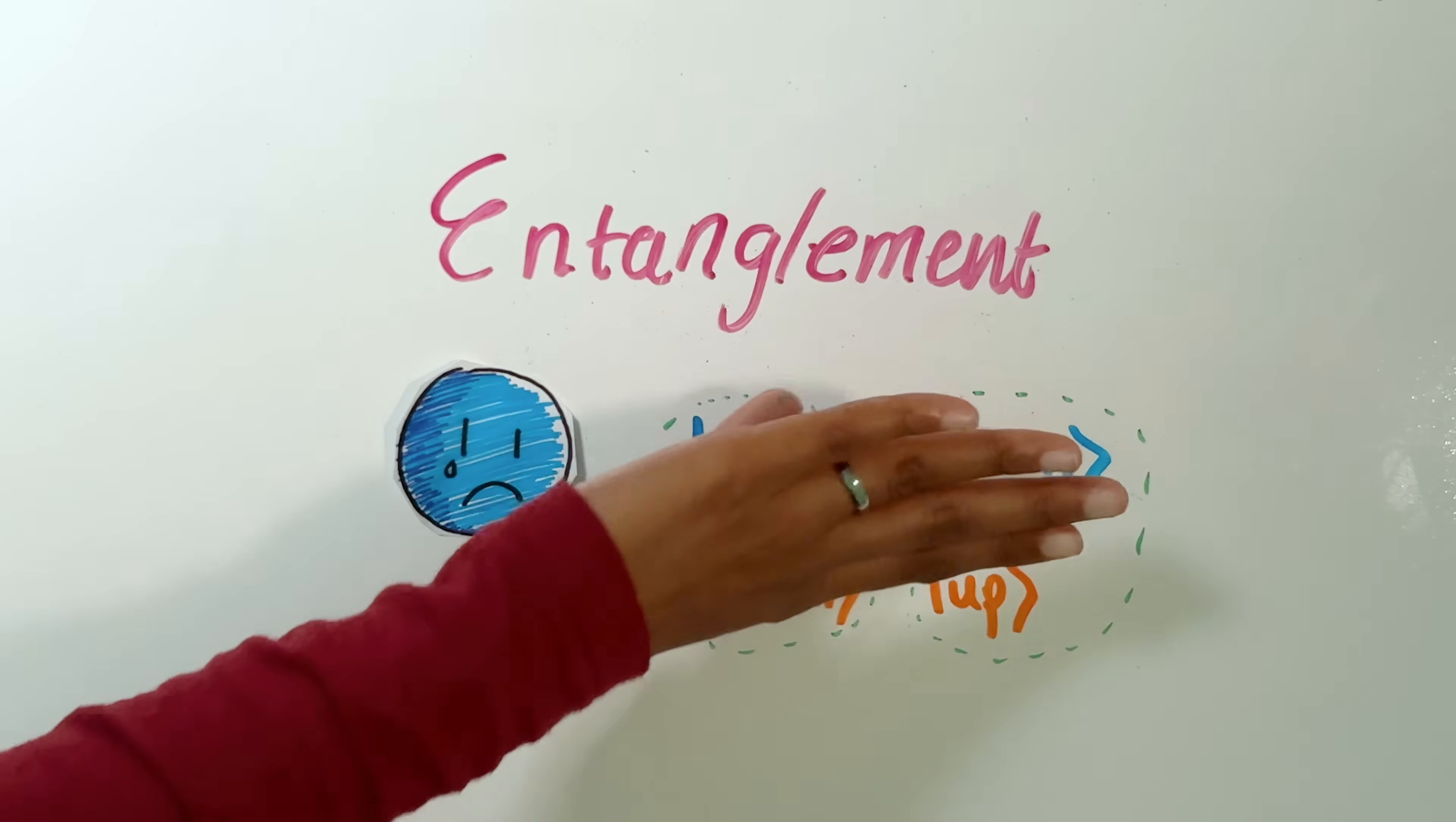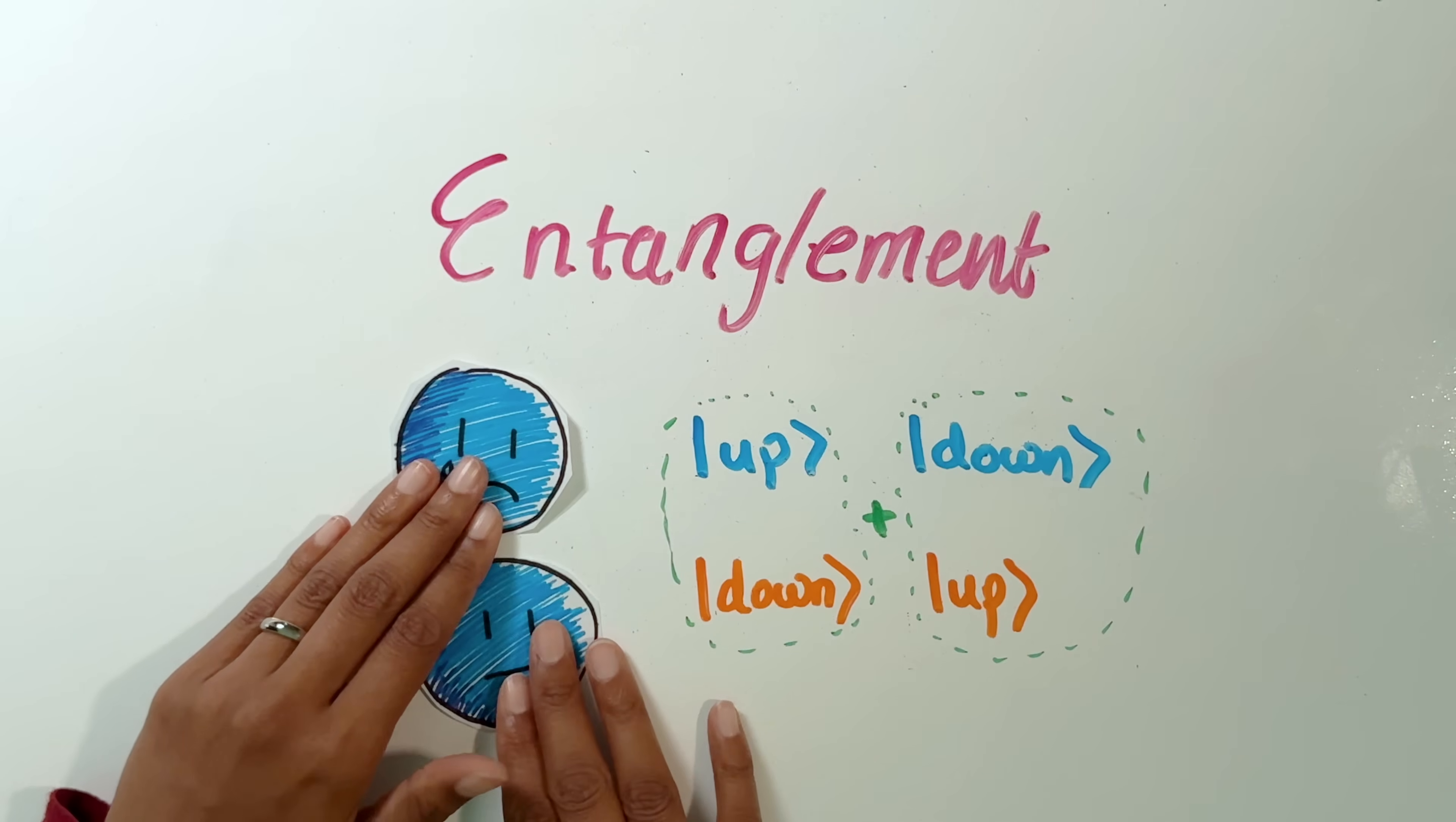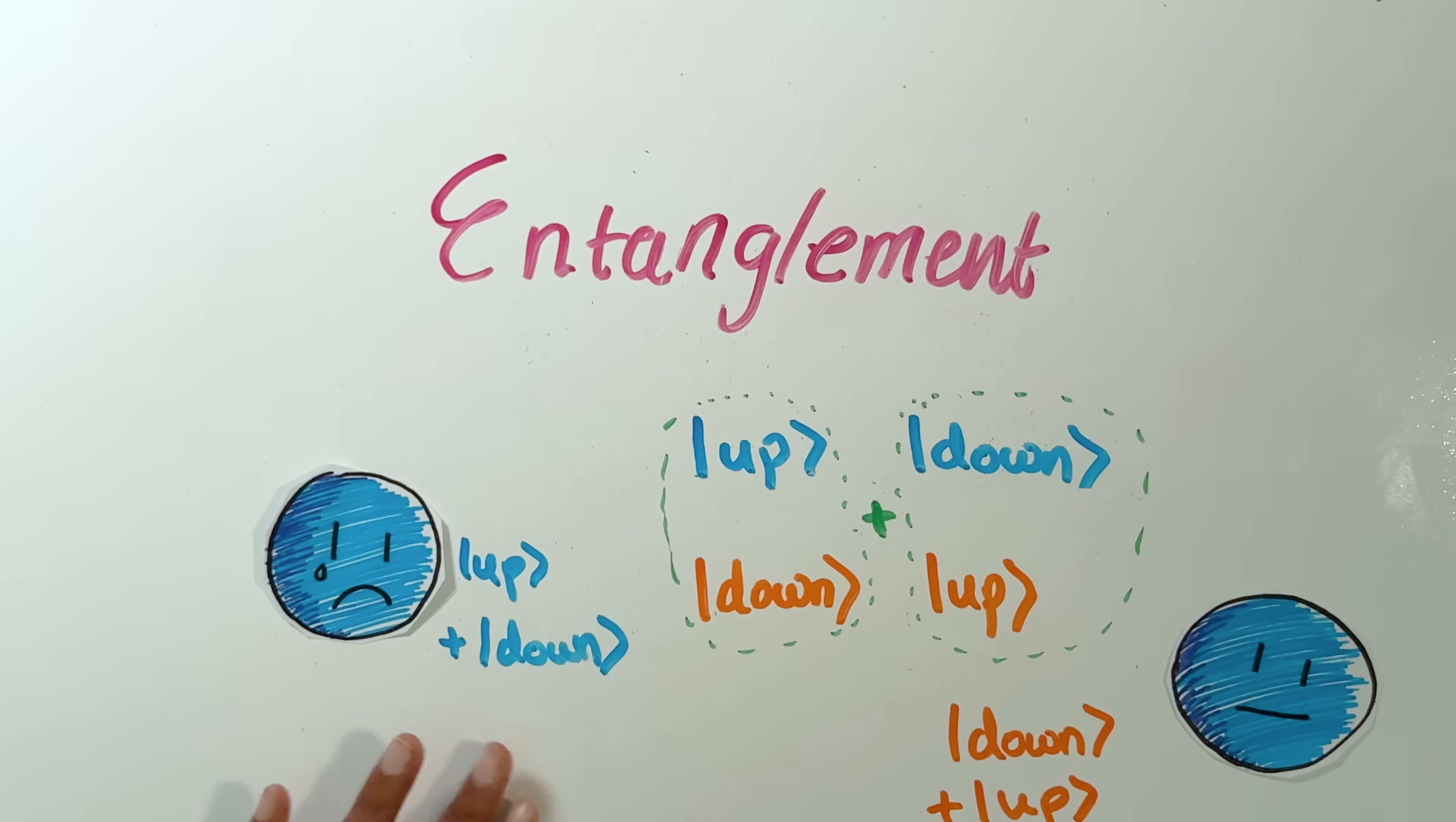You might think, why do I have to do that? Can't I just say that this electron is both down and up at the same time? Well, no, you can't because of this. Imagine that these two electrons now fly off. If both you and your friend truly believed that these are the correct states for these electrons, and they are separate states that don't depend on each other whatsoever, then you're going to get some very strange measurement results.